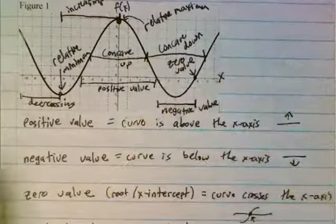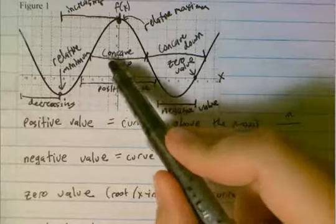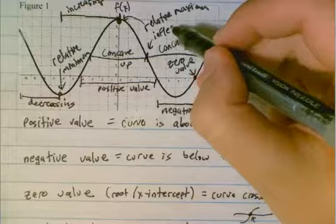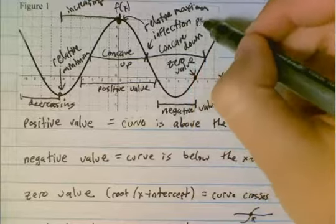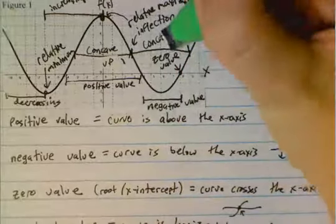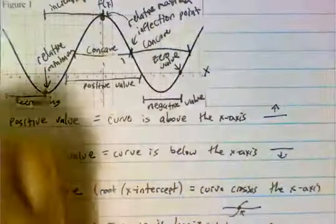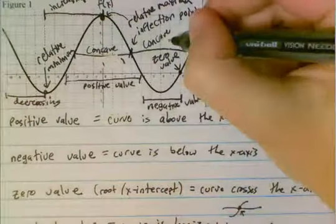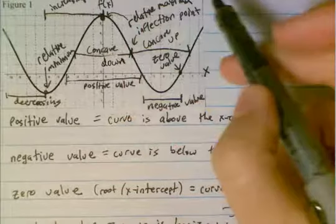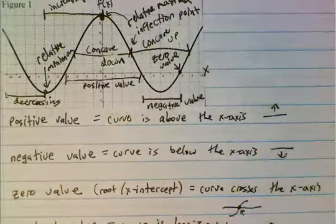Remember, the inflection point is where the curve switches concavity, so when we switch from concave up to concave down there's an inflection point. My bad — this is not concave down or concave up the way I labeled it; I reversed those — it should be concave up and concave down. We still have that inflection point though when it switches from concave down to concave up.